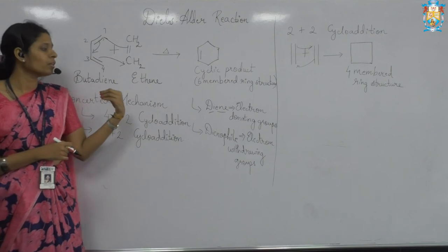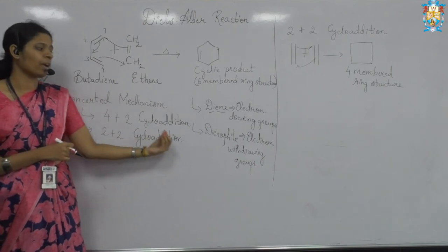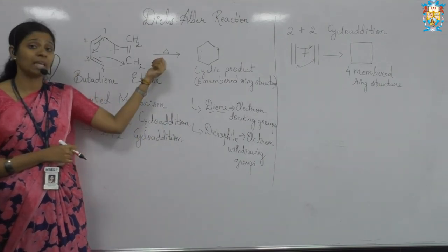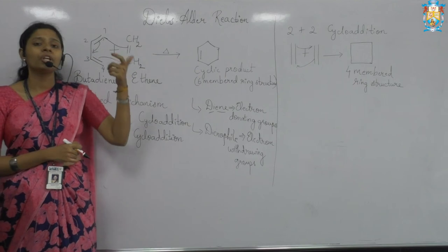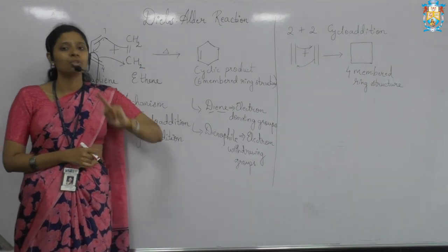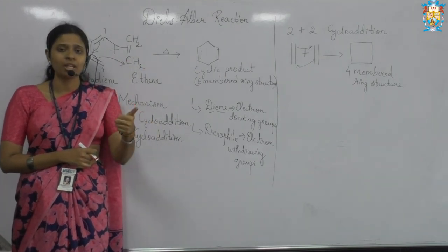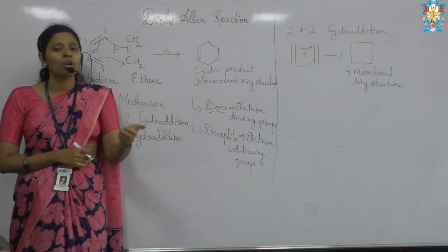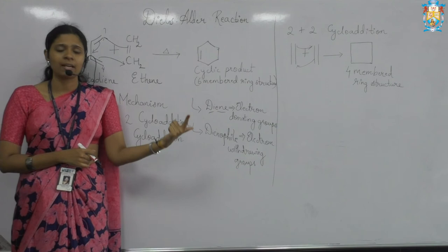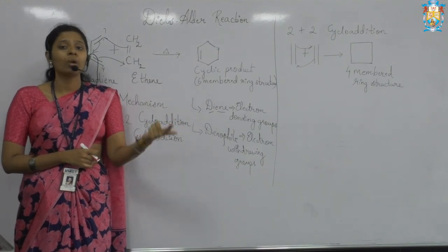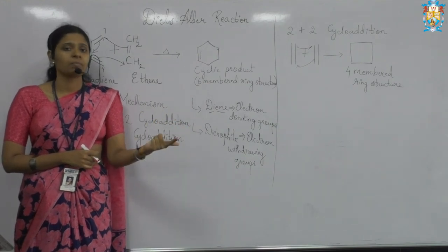The four-plus-two cycloaddition specifically takes place in the presence of heat. So here you have again two types: one is the thermal reaction, and the Diels-Alder reaction also comes as a photochemical reaction.